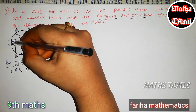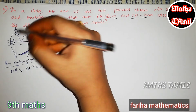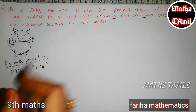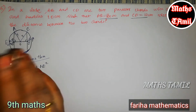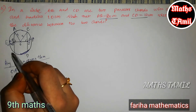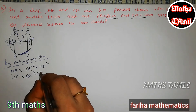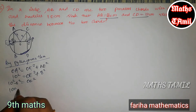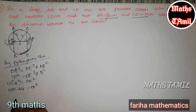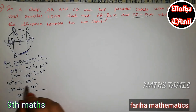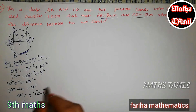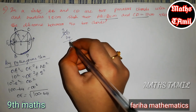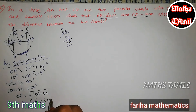AE is half of AB, so AE equals 8. OA is the radius, which is 10. So OE squared equals OA squared minus AE squared, that is 10 squared minus 8 squared, which equals 100 minus 64 equals 36. Therefore OE equals root of 36, which is equal to 6 centimeters.